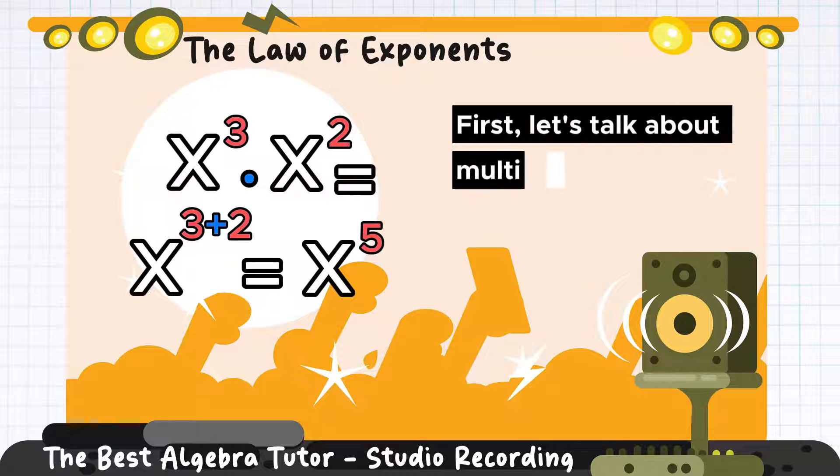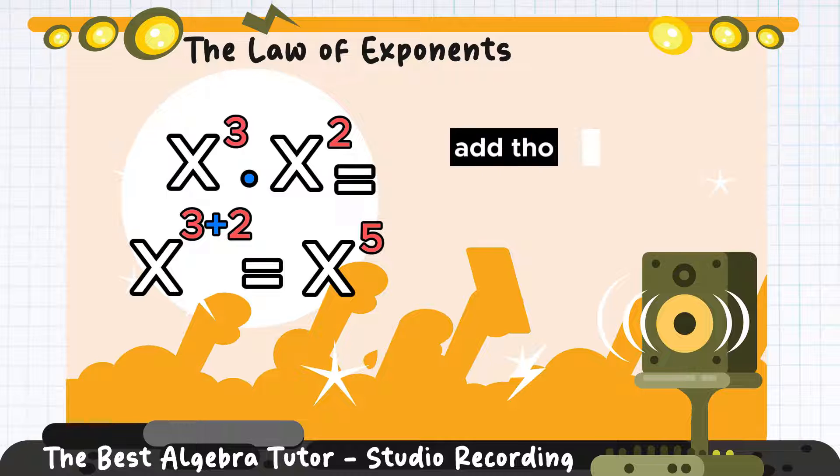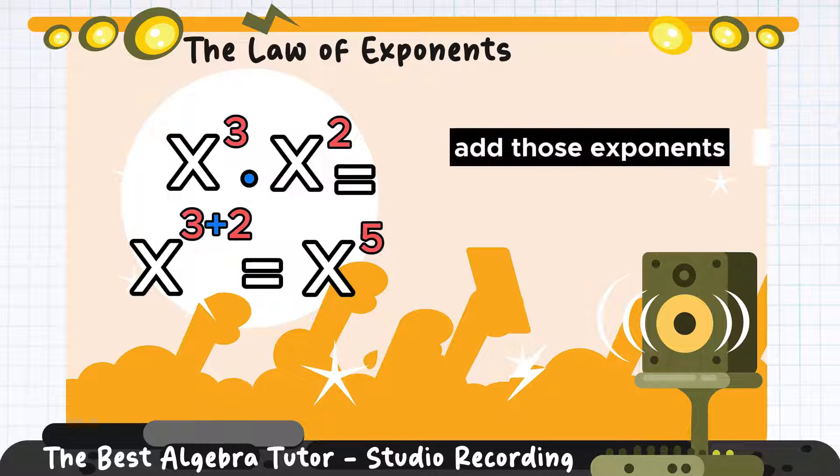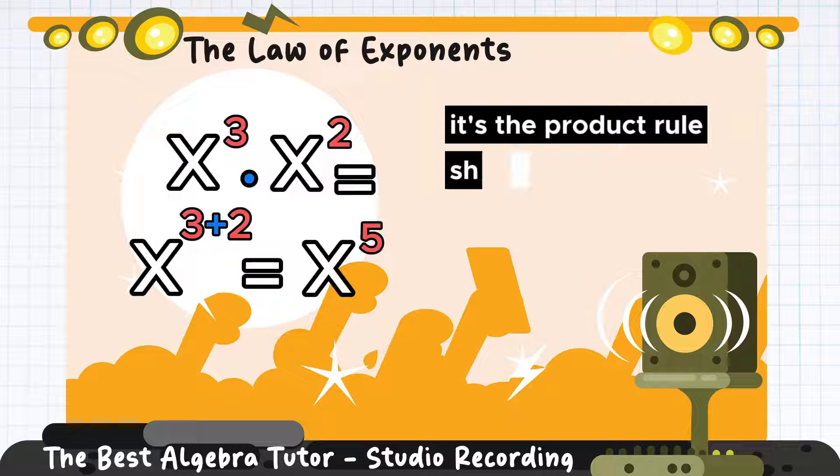First let's talk about multiplication's might. When you multiply with the same base, add those exponents. It's the product rule, shining so bright.